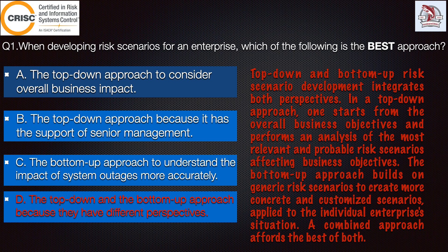Moving to option B — the top-down approach because it has the support of senior management — this option is also incorrect because management is essential, but the risk scenario should also consider the impact of individual system outages.